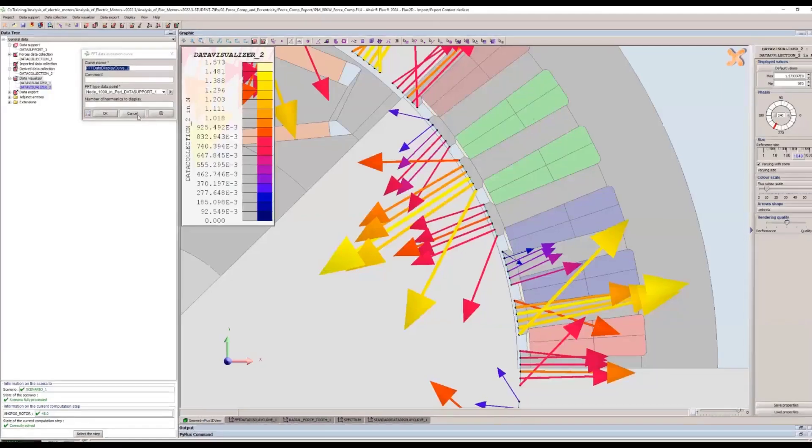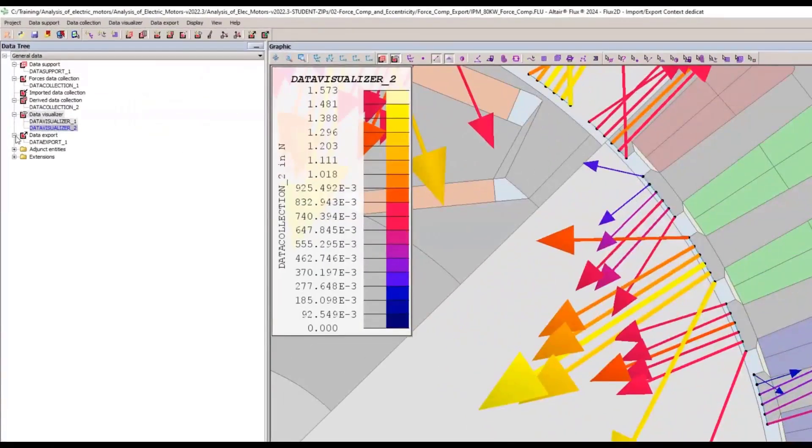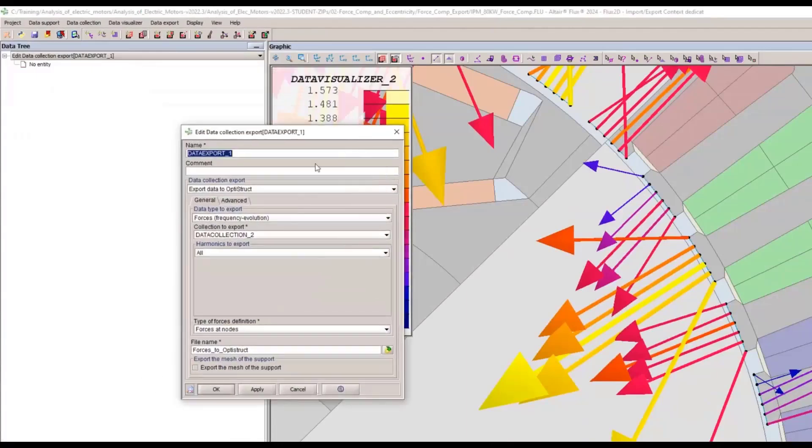And speaking of OptiStruct, then we can do the next step, which is exporting. So all of the forces here we have computed, we can do a data export. Here we choose the frequency export. And here we have the choice, as I said, forces at nodes or global forces. And we can export that file to OptiStruct.